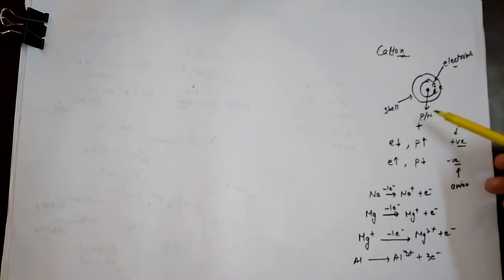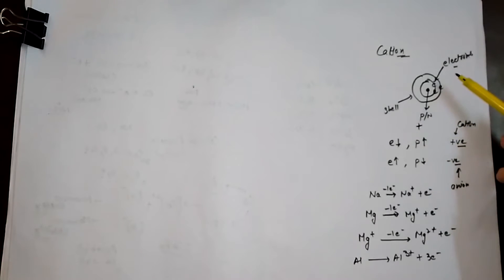Hello friends, we are talking about the cation. Normally an atom contains protons, neutrons, and electrons. Neutrons have no charge, protons have a positive charge, and electrons have a negative charge. An atom is called neutral whenever there is an equal number of protons and electrons.